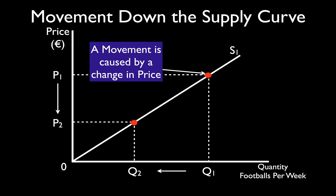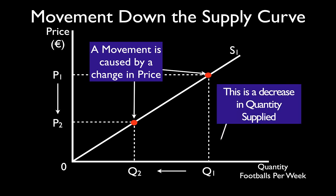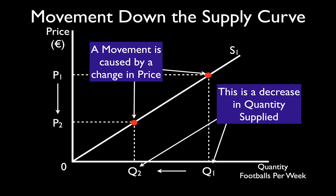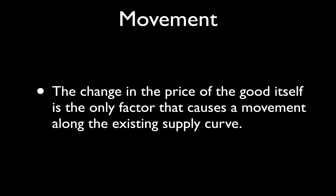A movement is caused by a change in the selling price of the good itself. We move from one point on the supply curve down to a new point — this is a decrease in quantity supplied from Q1 to Q2. The supply curve itself has not changed. A change in price causes a movement, and a movement causes a change in quantity supplied. The change in the price of the good is the only factor that causes a movement along the existing supply curve — all other factors that affect supply cause a shift.